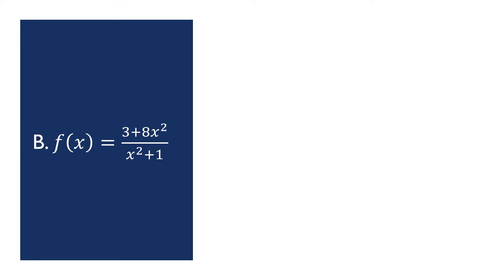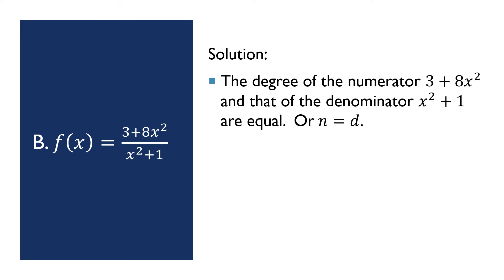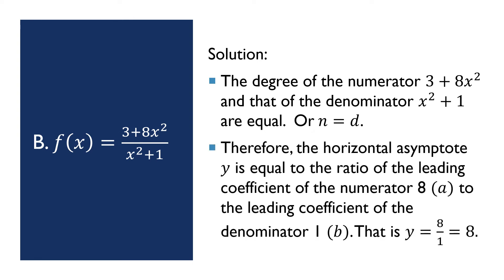Example number 2. We have the function f(x) = (3 + 8x²) / (x² + 1). The degree of the numerator and the degree of the denominator are equal, so n = d. Therefore, the horizontal asymptote y is equal to the ratio of the leading coefficient of the numerator, which is 8, to the leading coefficient of the denominator, which is 1. That gives y = 8/1, so y = 8 is the horizontal asymptote of the function.